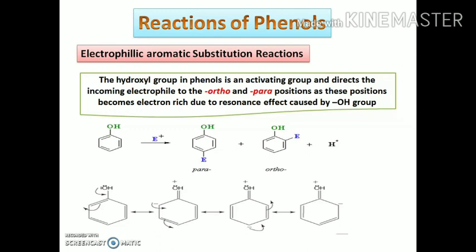The first chemical property of the phenols is the electrophilic substitution reactions due to the aromatic ring. In this reaction the hydrogen atom of the benzene ring gets replaced by various electrophiles. The hydroxyl group present in phenols helps in the ring substitution and directs the incoming electrophile to the ortho and para positions due to the electron rich positions.